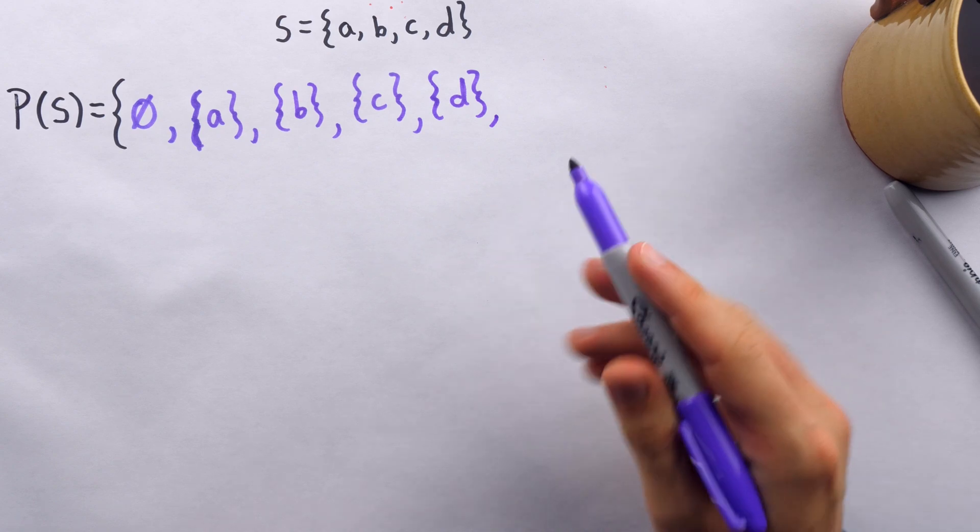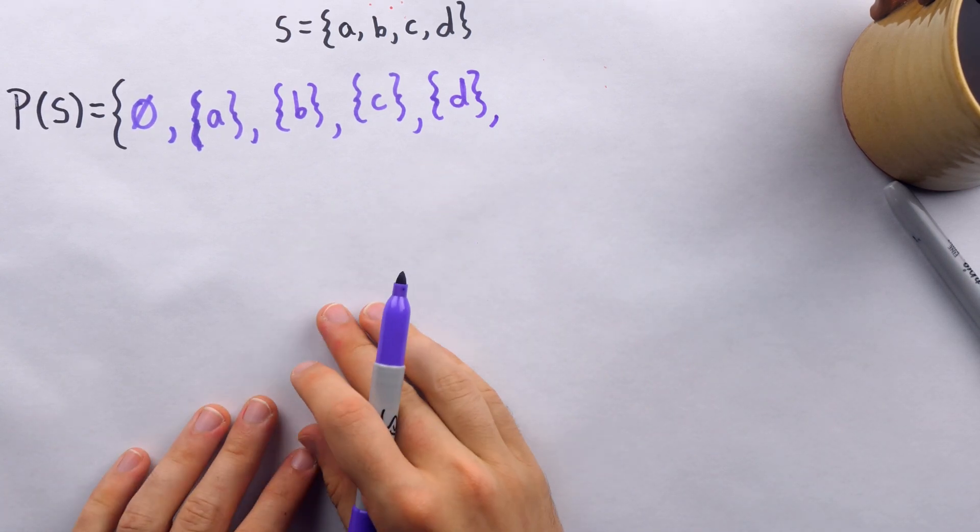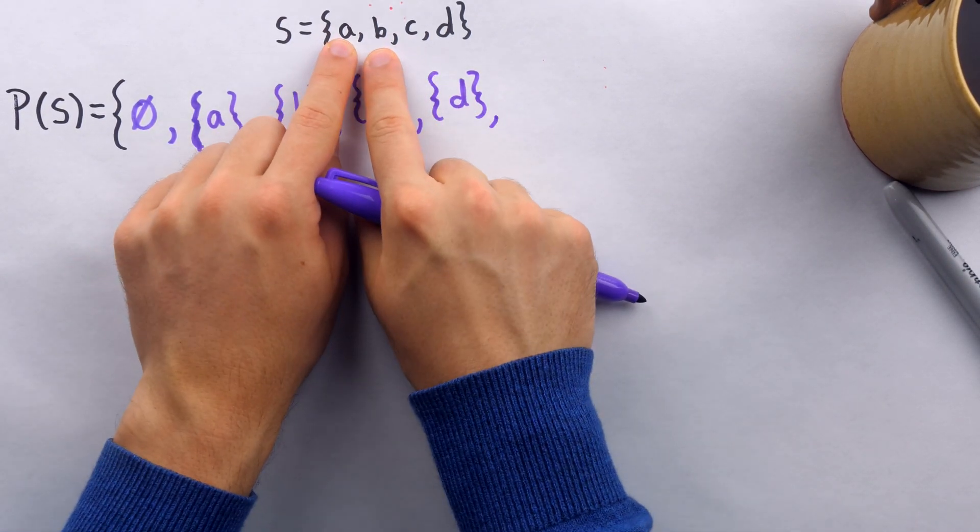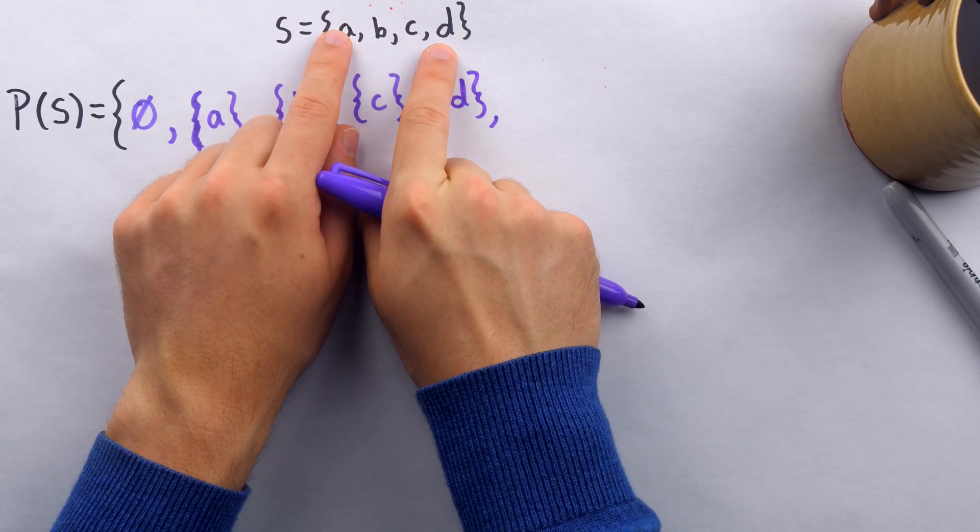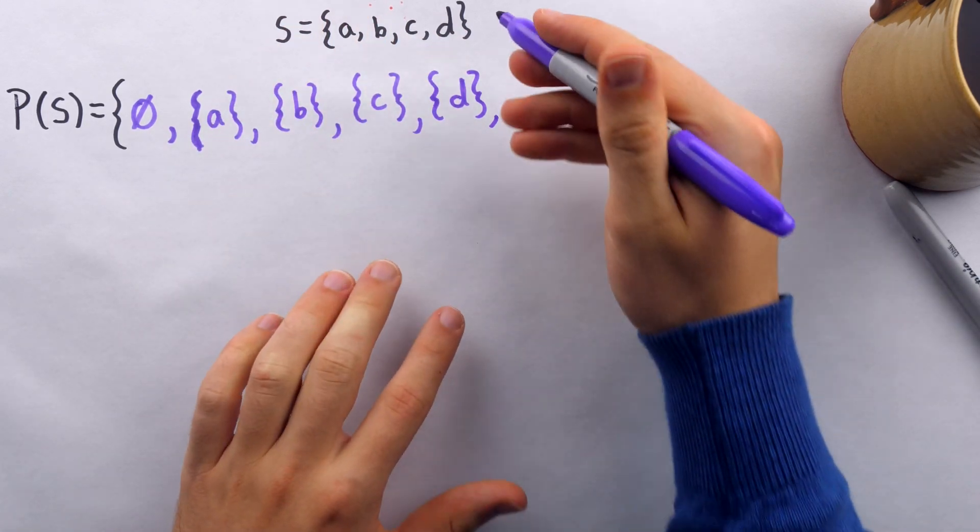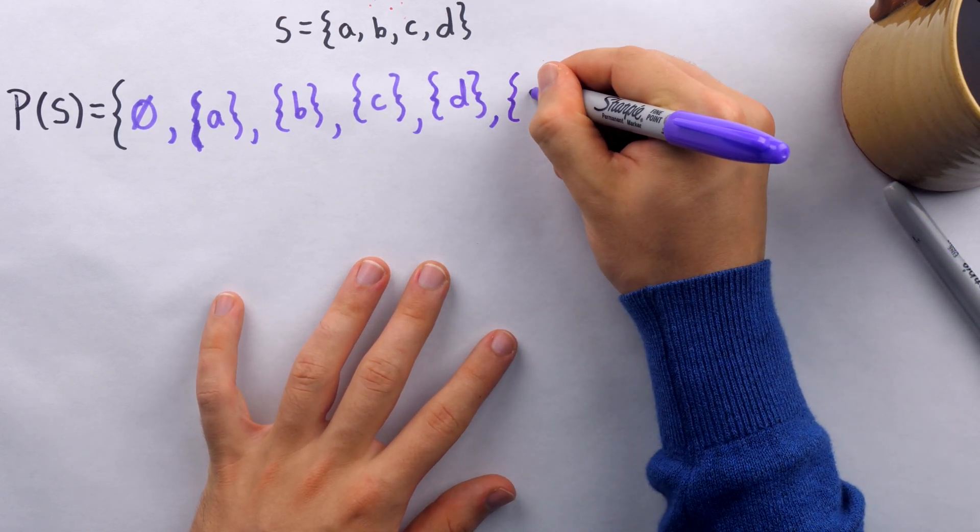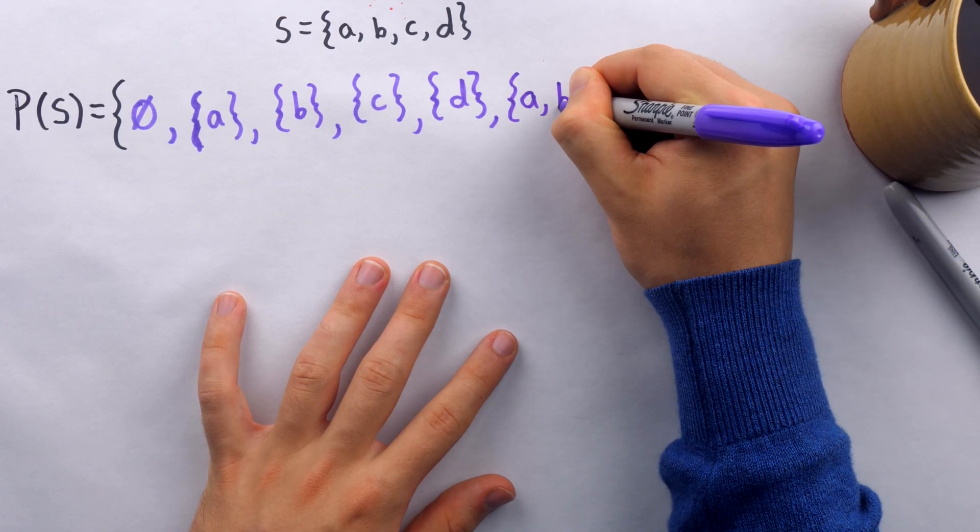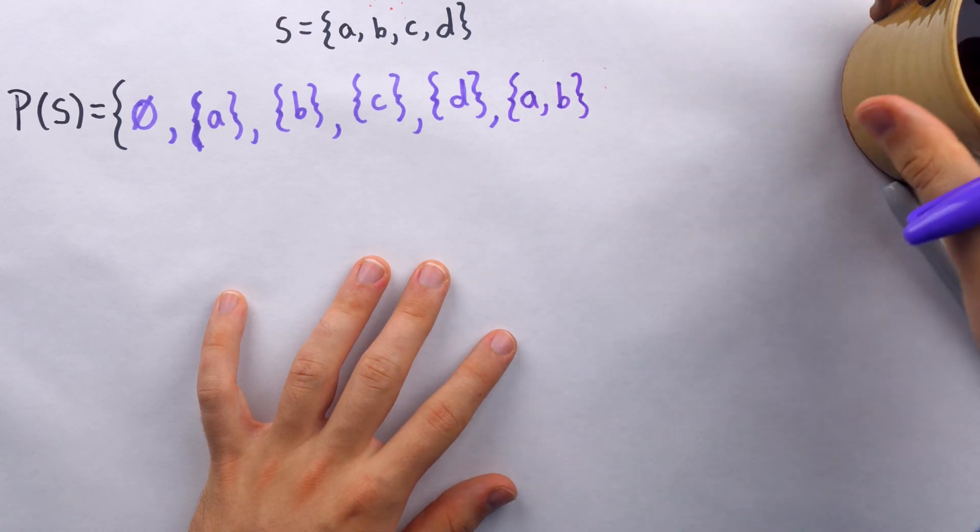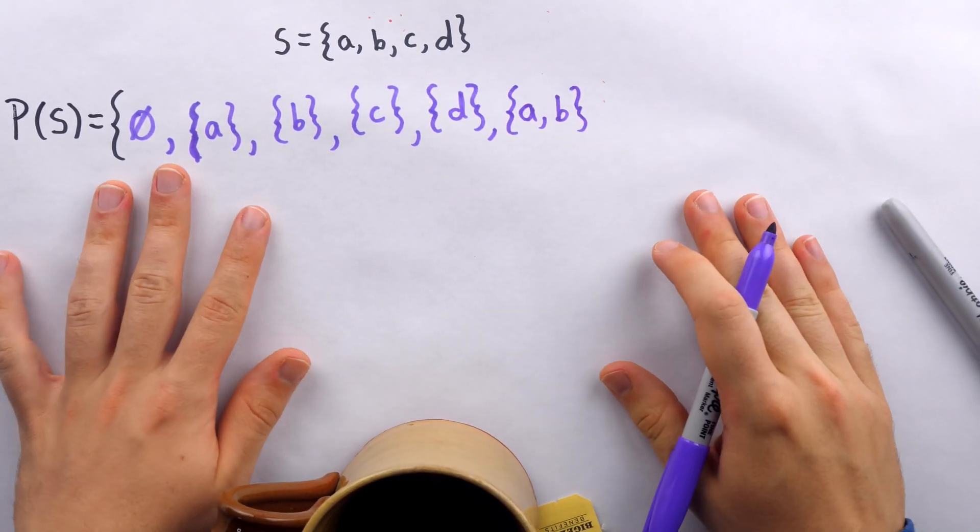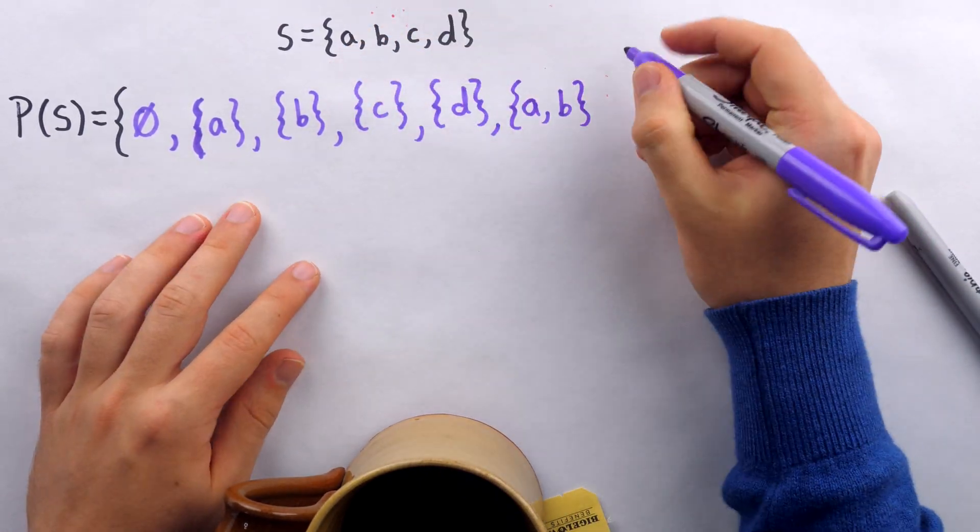All right, we've still got some more space here. And we can move on to the two element subsets. So I'm thinking about starting with A, B, then A, C, then A, D, like that. Think about it like a ticker running along all these elements. So the first subset with two elements is going to have A and B.